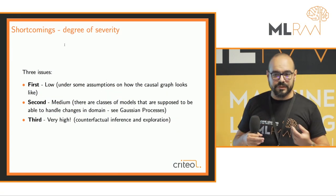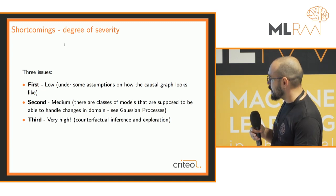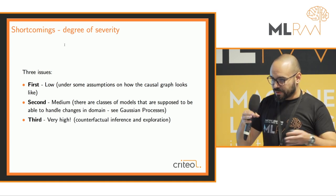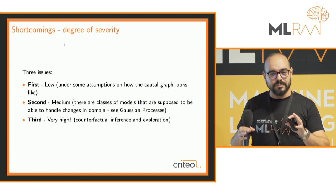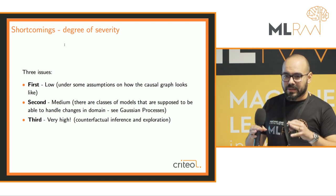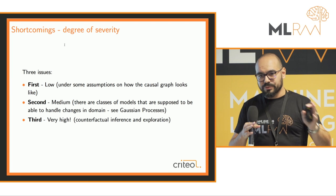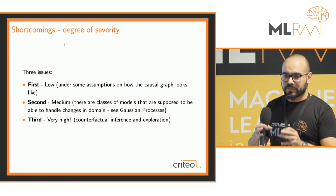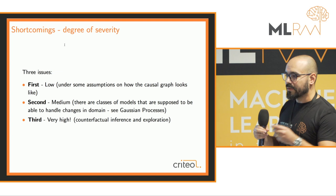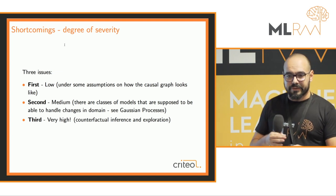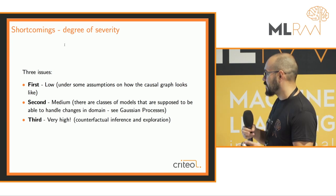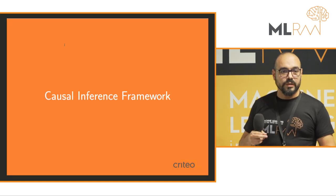The degrees of severity: the first (Simpson's paradox) is quite low under some assumptions about the causal graph — you can use the backdoor criterion to reason your way out. The second (model capacity) can be addressed with Gaussian processes or deep nets with dropout. But the third — high variance — means you're in the dark wherever you didn't explore in the past. The only thing you can do is counterfactual inference and exploration.